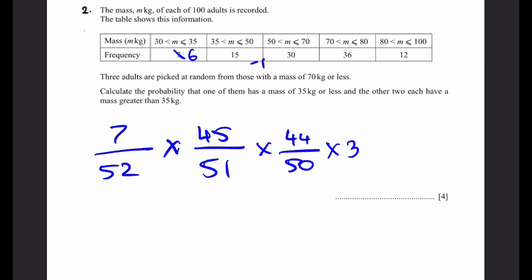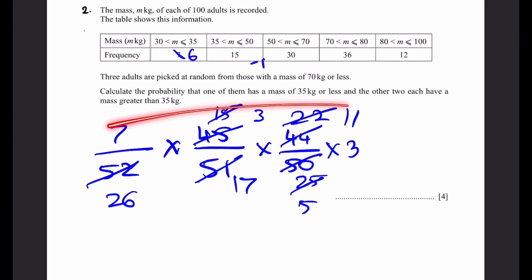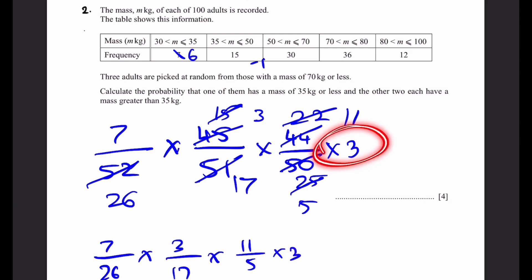And we can first simplify the fractions. So, 7 by 52 cannot be simplified. 45 by 51, we can simplify this into 15 by 17, and 44 by 50 can become 22 by 25. Now, can we simplify in between these two are available? So, this is 3, this is 5, dividing both by 5. This will become 11, this will become 26. Now, we actually do not have any more simplifications possible, since all the numbers are co-prime. Now, we can multiply these numbers directly the numerators and denominators. Let's just write what we have. 7 by 26 times 3 by 17 times 11 by 5. And don't forget the multiplication by 3 at the end here.